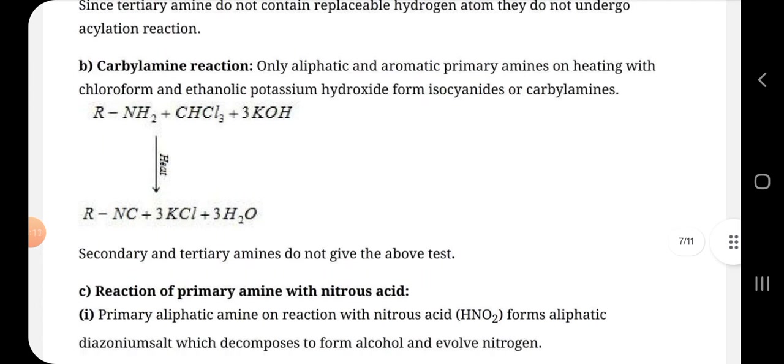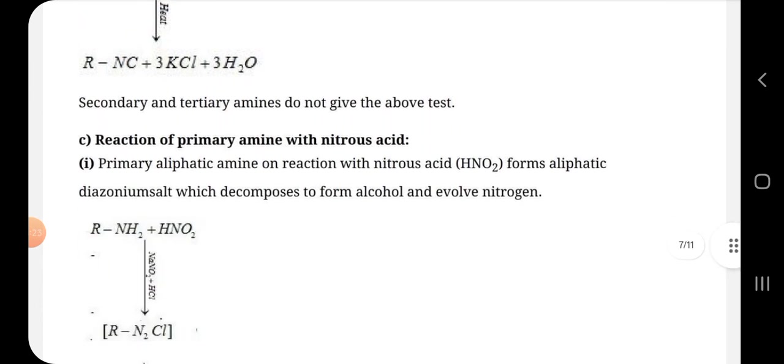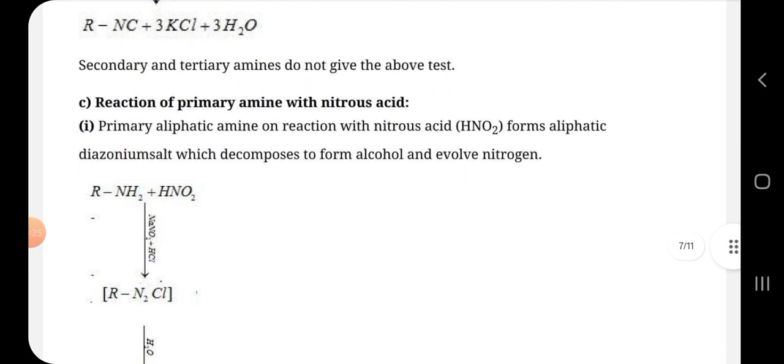Then comes the carbylamine reaction. Only aliphatic and aromatic primary amines on heating with chloroform and ethanolic potassium hydroxide form isocyanides or carbylamines. Secondary and tertiary amines do not give the above test.